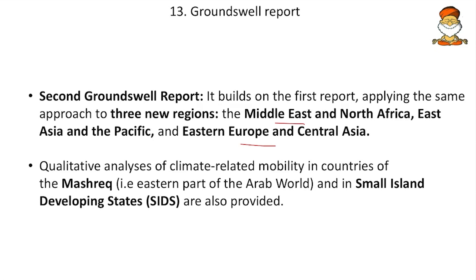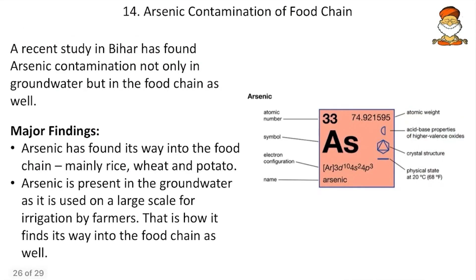The report also gives qualitative analysis of climate-related mobility in countries of the Mashraq (eastern part of the Arab world) and in SIDS — Small Island Developing States — which are among the worst victims of climate change and global sea level rise.